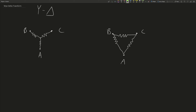Now we can name these resistors — these are two different sets of three resistors. For the Y configuration, we can name them R1, R2, R3. For the delta configuration, we name them RA, RB, and RC. What the Y-delta transform states is that these two configurations are equivalent, so you can move from Y to delta or delta to Y.